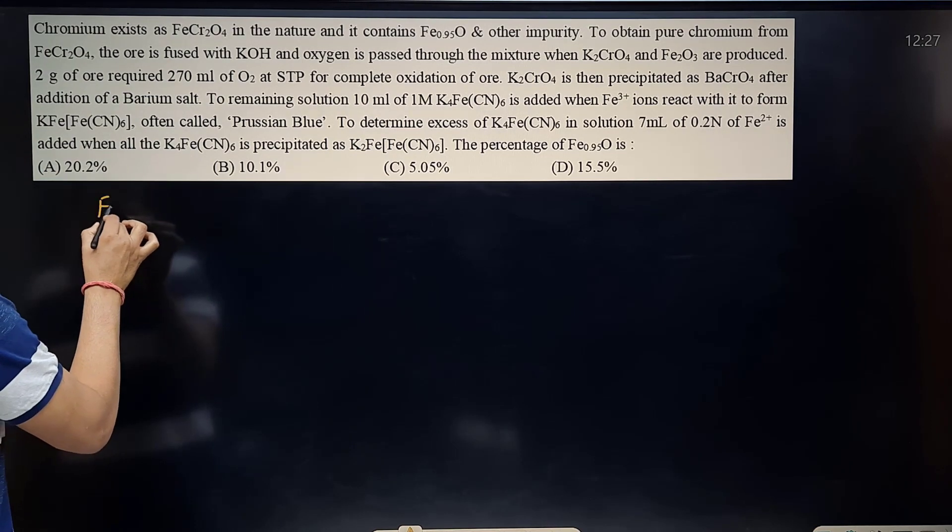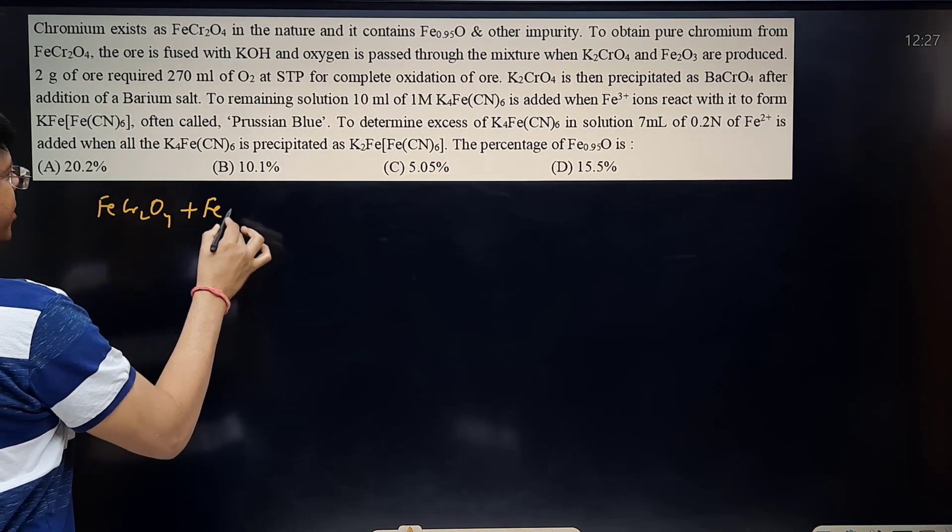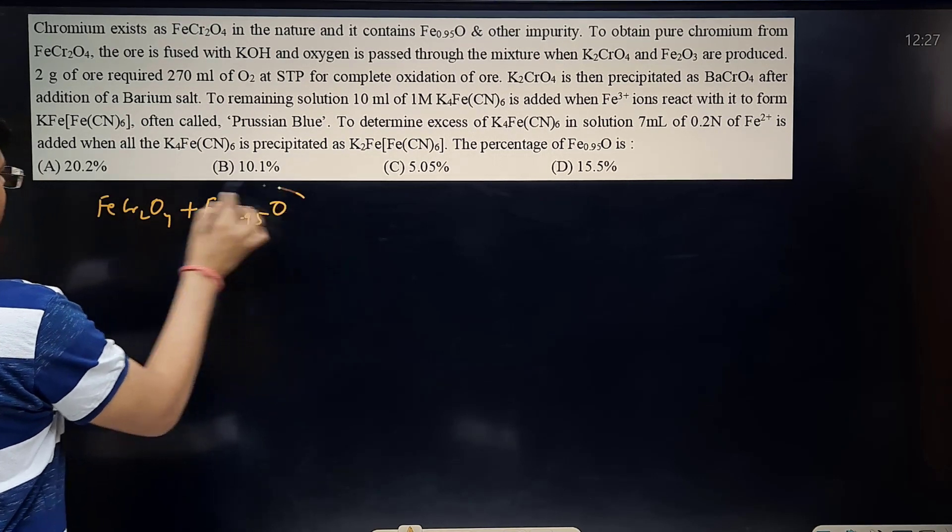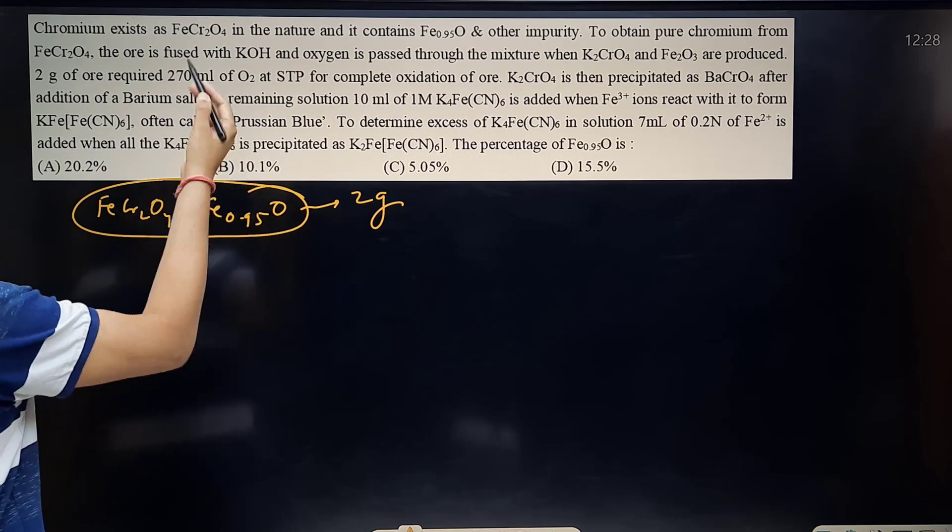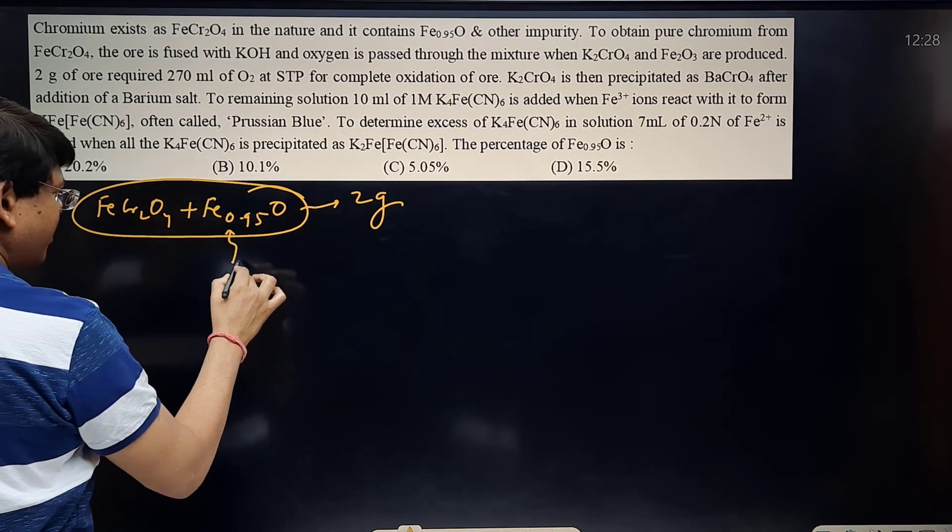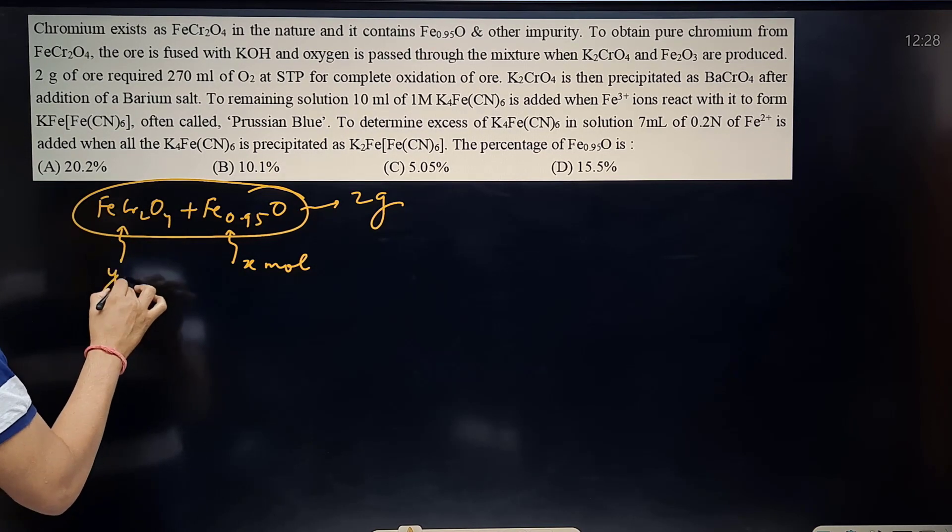Let's do it. So you have FeCr2O4 plus Fe0.95O. This is given as 2 grams. Of course we have to find out the composition, so let us assume this is X mol and FeCr2O4 is Y mol.